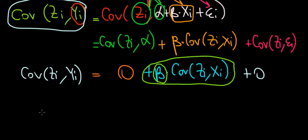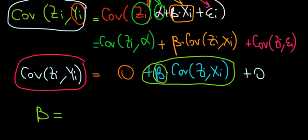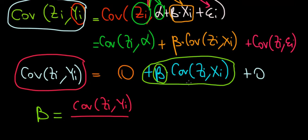What is the estimate of beta? If we solve the math, the estimate of beta is the covariance between z and y — the covariance between the instrumental variable and the dependent variable — divided by the covariance between the instrumental variable and the independent variable.